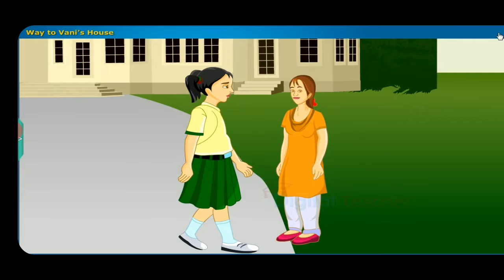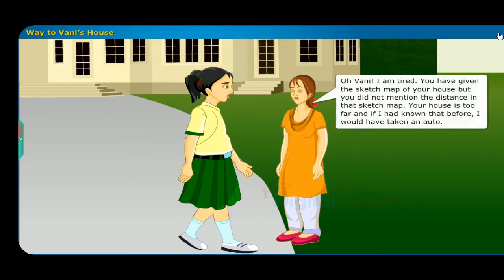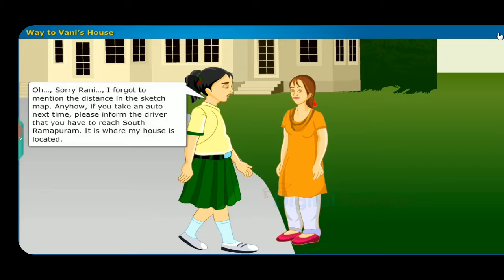Now let us go through the conversation of Vani and Rani after Rani reaches Vani's house. Rani says: 'Oh Vani, I am tired. You gave me the sketch map of your house but you did not mention the distance — your house is too far, and if I had known that before I would have taken an auto.' Vani replies: 'Oh sorry Rani, I forgot to mention the distance. Anyhow, next time please inform the driver that you have to reach South Ramapuram — that is where my house is located.'